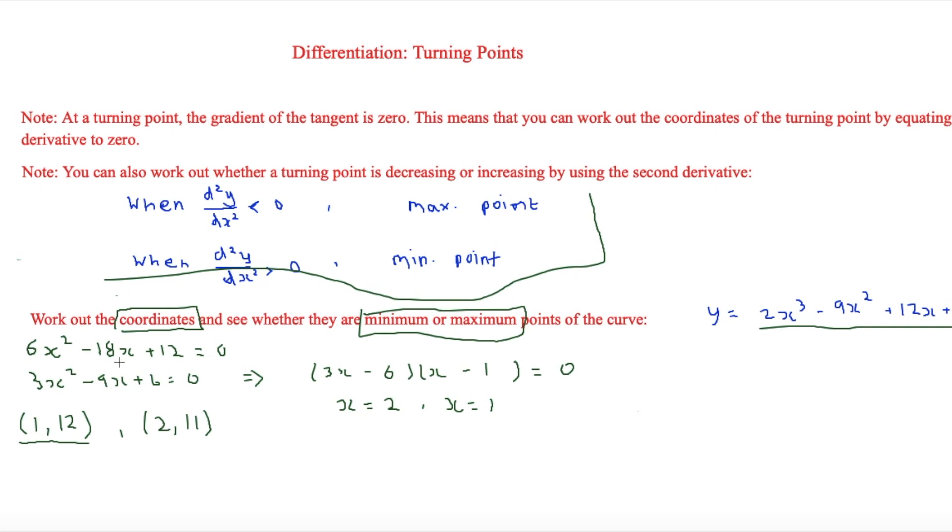In order to do this we're simply going to find out the second derivative. 6x² - 18x + 12 = 0, that is the first derivative. So we're just going to have to differentiate this again. That will therefore equal, so d²y/dx² is equal to 12x - 18.